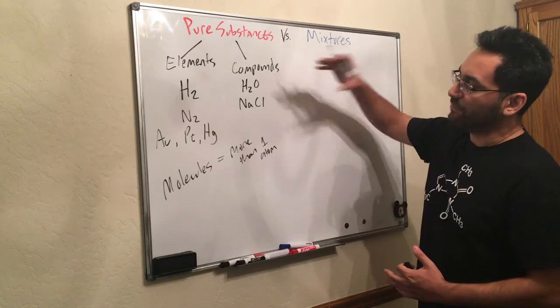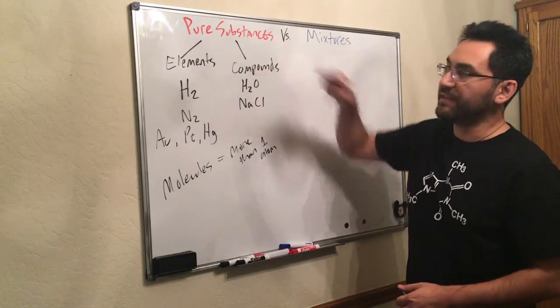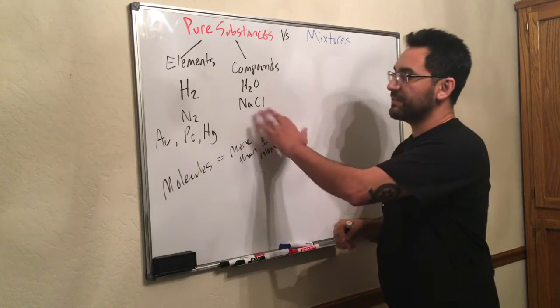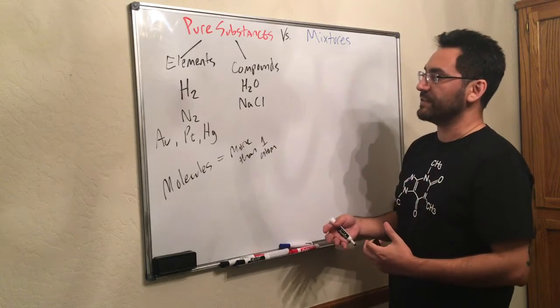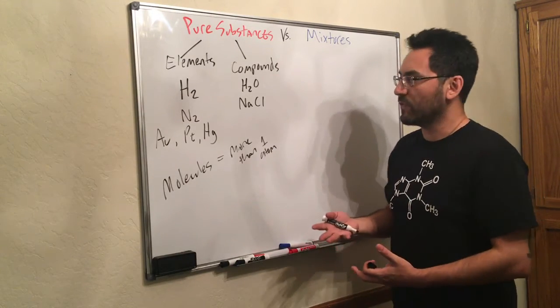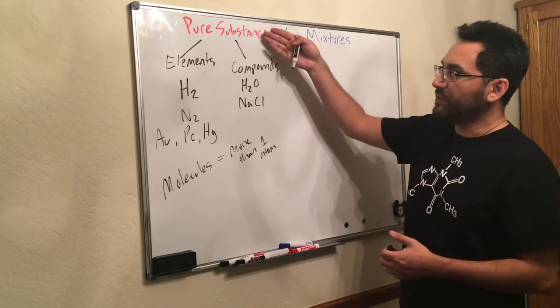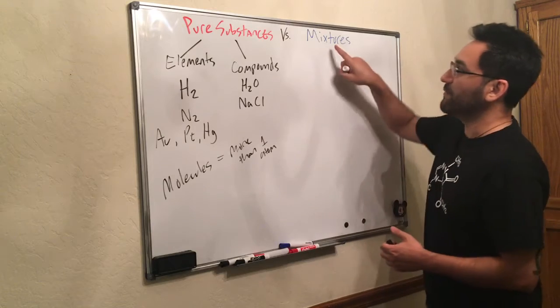But if we have a container that has nothing but water in it, we would still say that's a pure substance. So it's okay to have different kinds of atoms as long as there isn't water and salt together in the same solution. If we had a container that had water and salt in it, that wouldn't be a pure substance anymore. That would be a mixture.